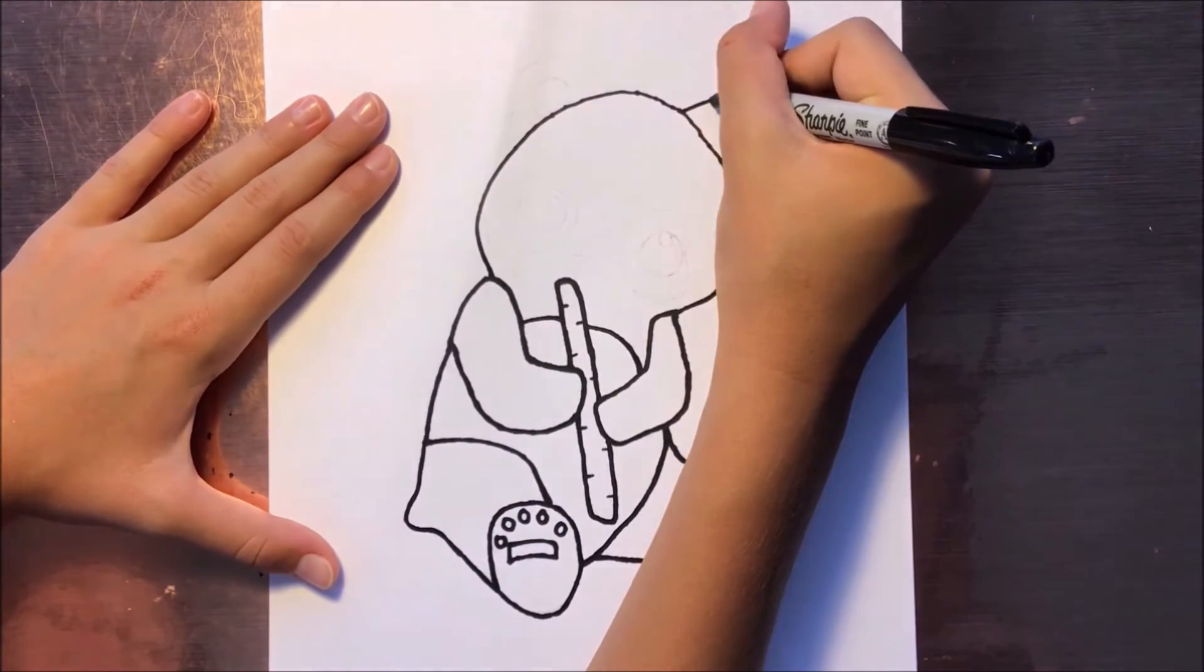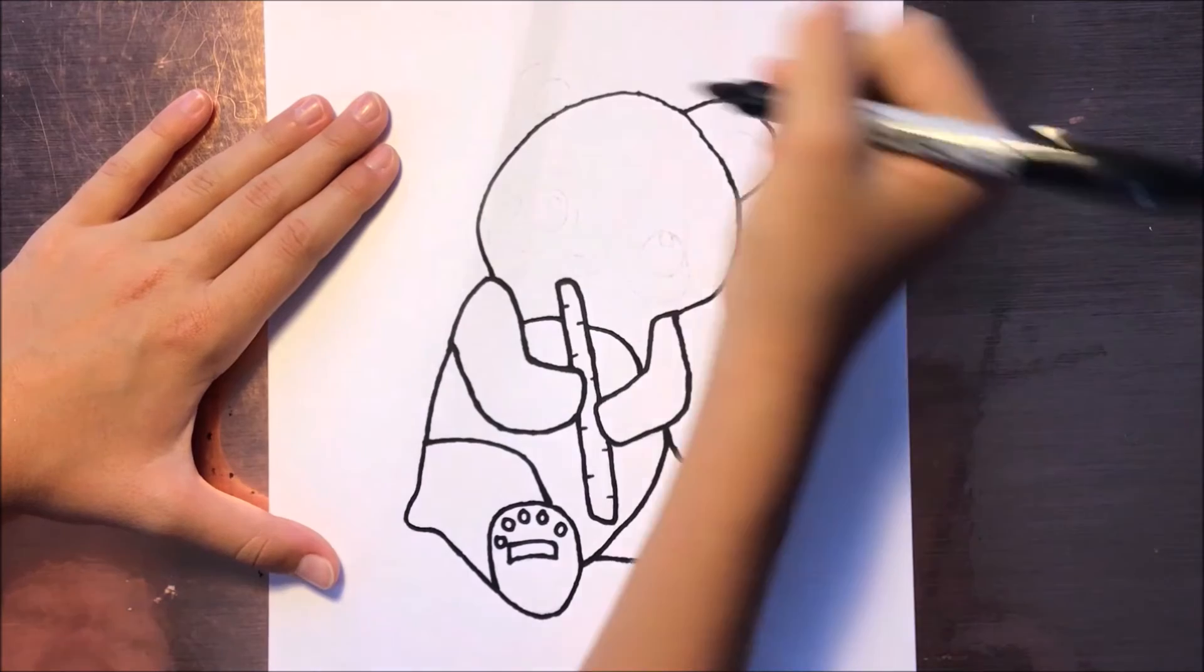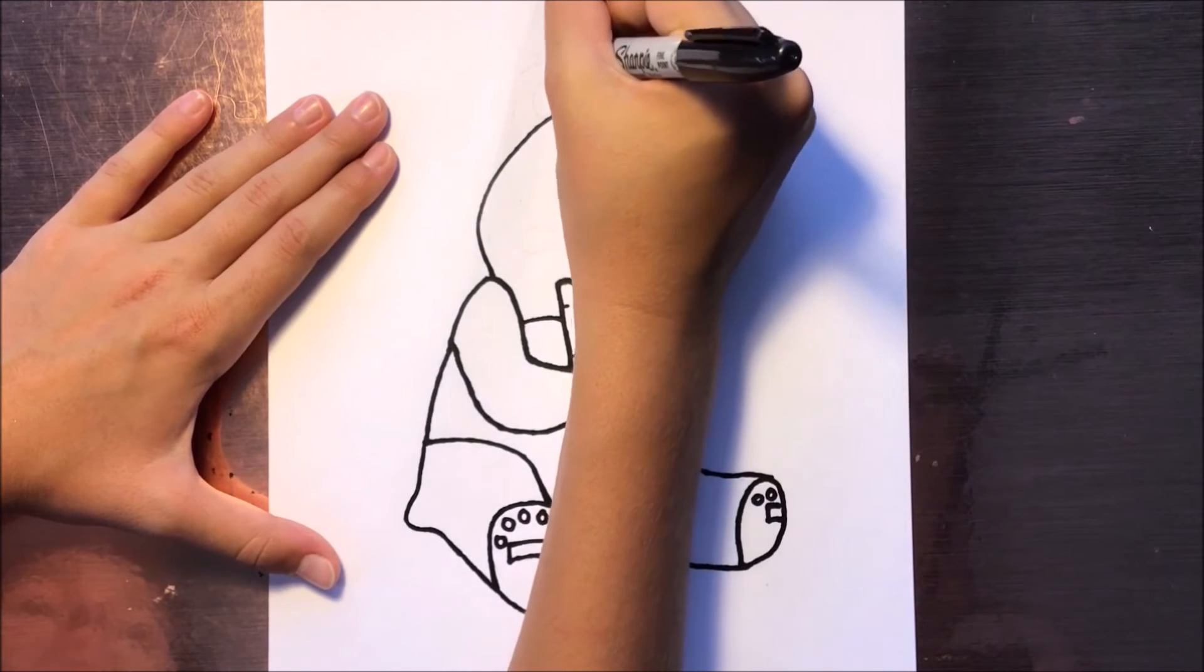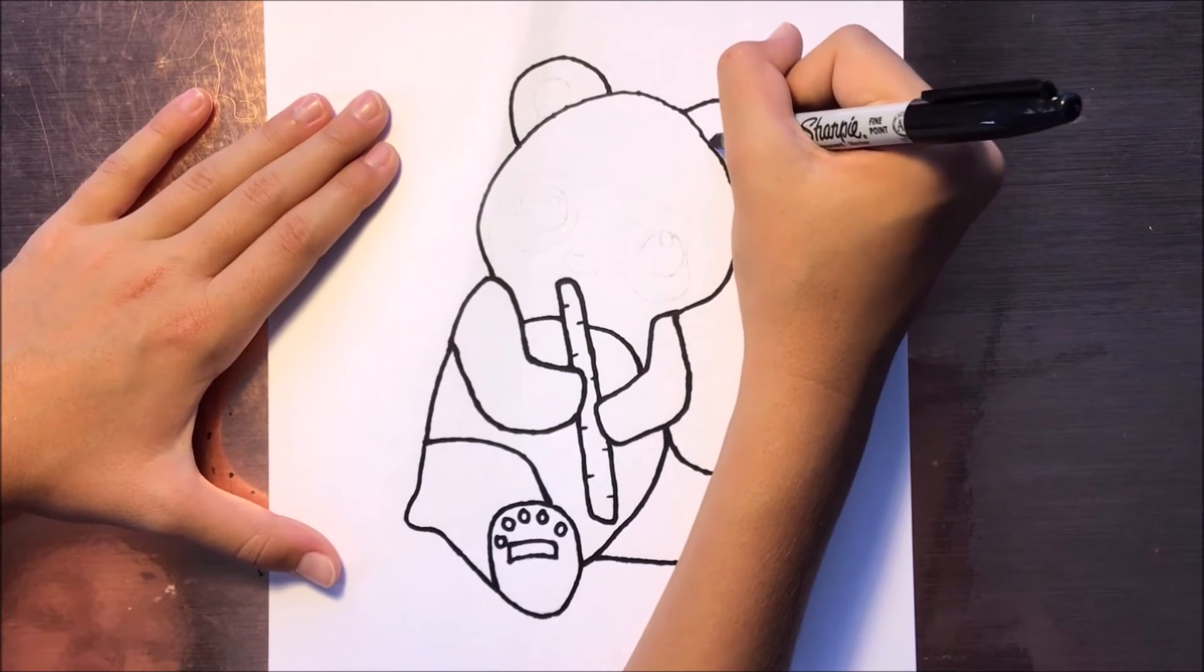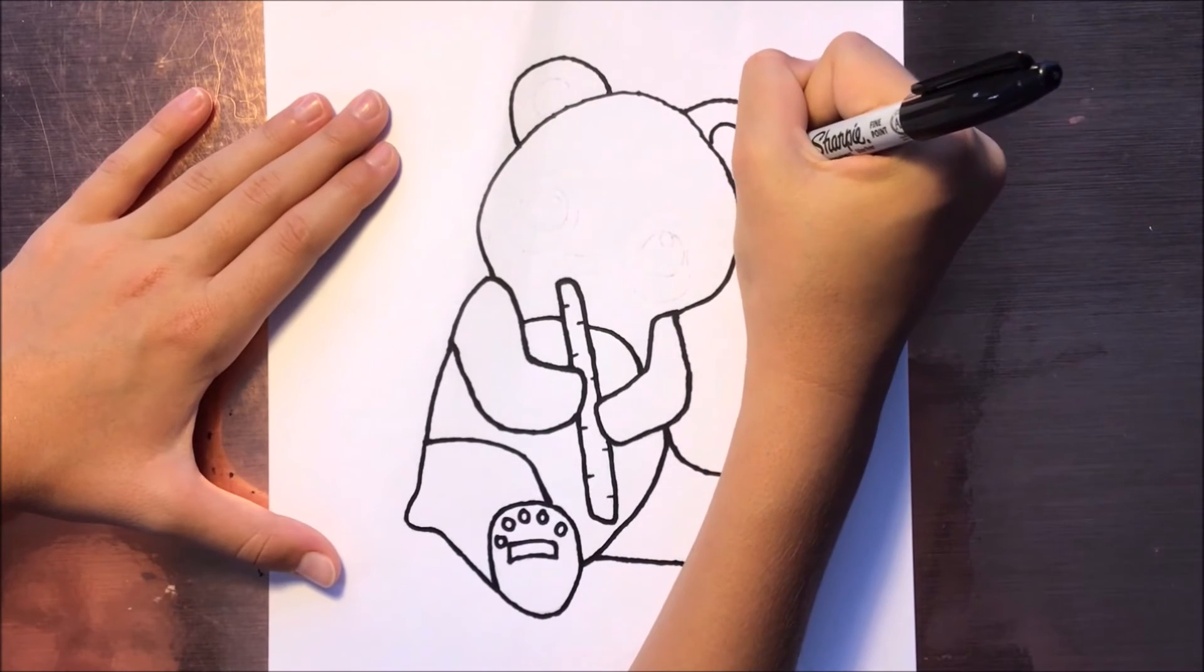I'm just going to do half a circle on each side, like this. Now we're going to do the inside of the ear, so it's going to be like that.